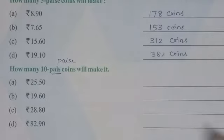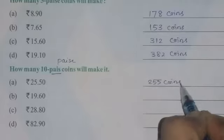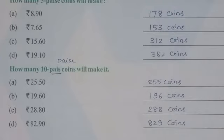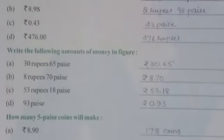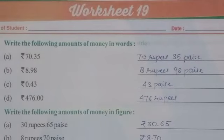You have to write down the answer: 255 coins. Similarly, the answers for the remaining questions I am going to write down — you have to solve them first in rough and then check your answers. If your answer is correct, note it down in your worksheet. Worksheet 19 is now completed. We will see you again with the solution of the next worksheet in the next video. Till then, have a good day!